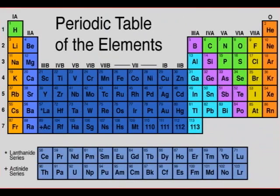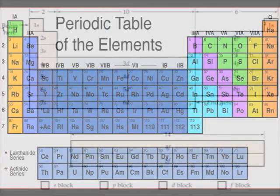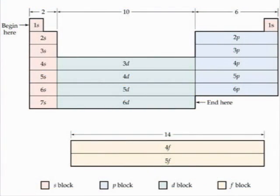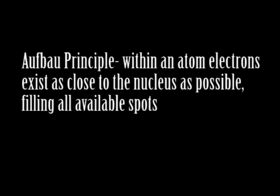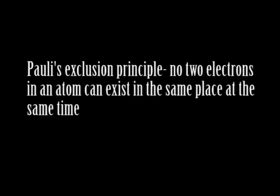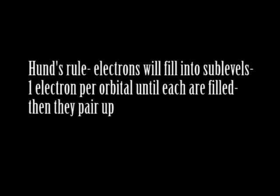These are the elements on the periodic table, and this is the order of the sub-levels in correspondence to the elements. There are a couple of rules you should follow. The Aufbau Principle: within an atom, electrons exist as close to the nucleus as possible, filling all available spots. Pauli's Exclusion Principle: no two electrons in an atom can exist in the same place at the same time. Hund's Rule: electrons will fill into sublevels one electron per orbital until each are filled, then they pair up.